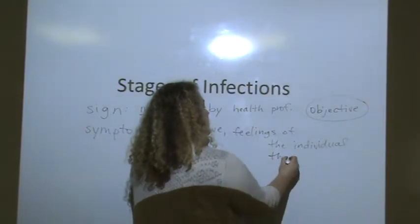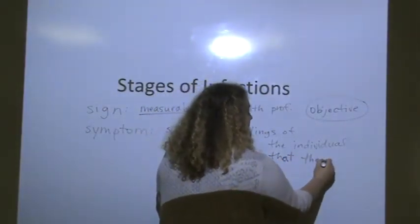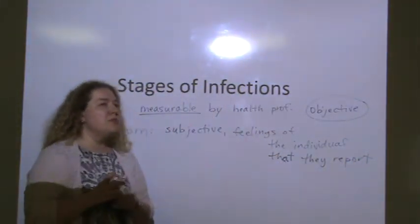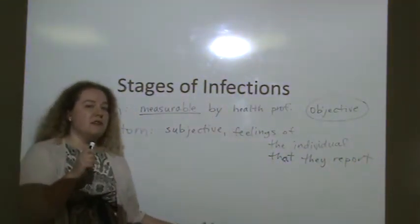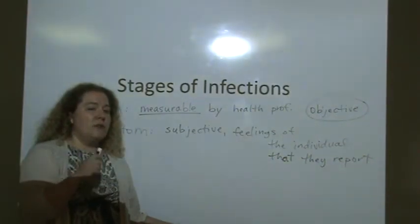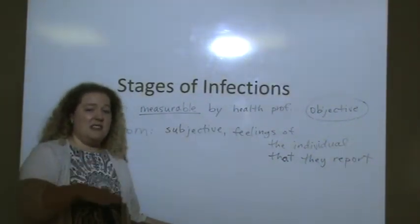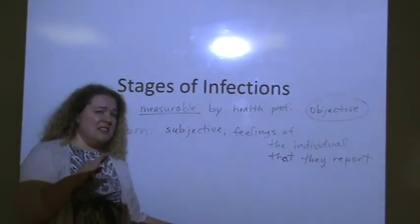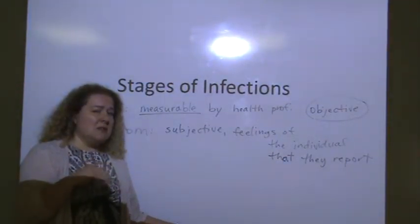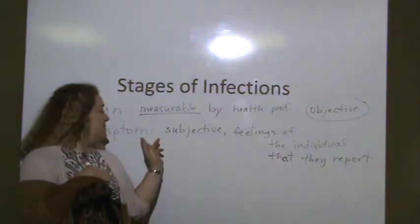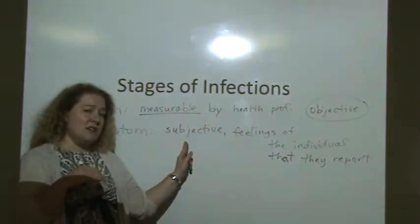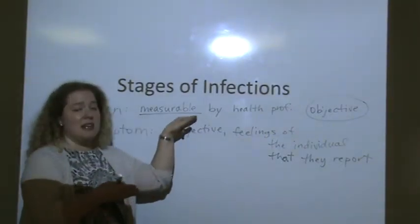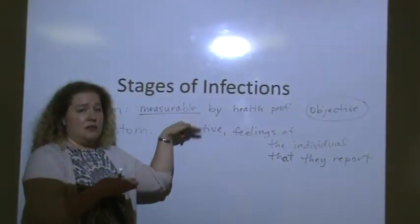So it's feelings of the individual that they report. And you can put those things on a chart, but you're depending on the patient to tell you. So pain, you can ask them, is it a 10, is it a 6 on a 10 point scale? How bad does it hurt? Dizziness. Sometimes that's subjective. People say that they're dizzy. You can't tell. If they stand up and fall over, you can see that happen. That's a sign. So signs, symptoms.